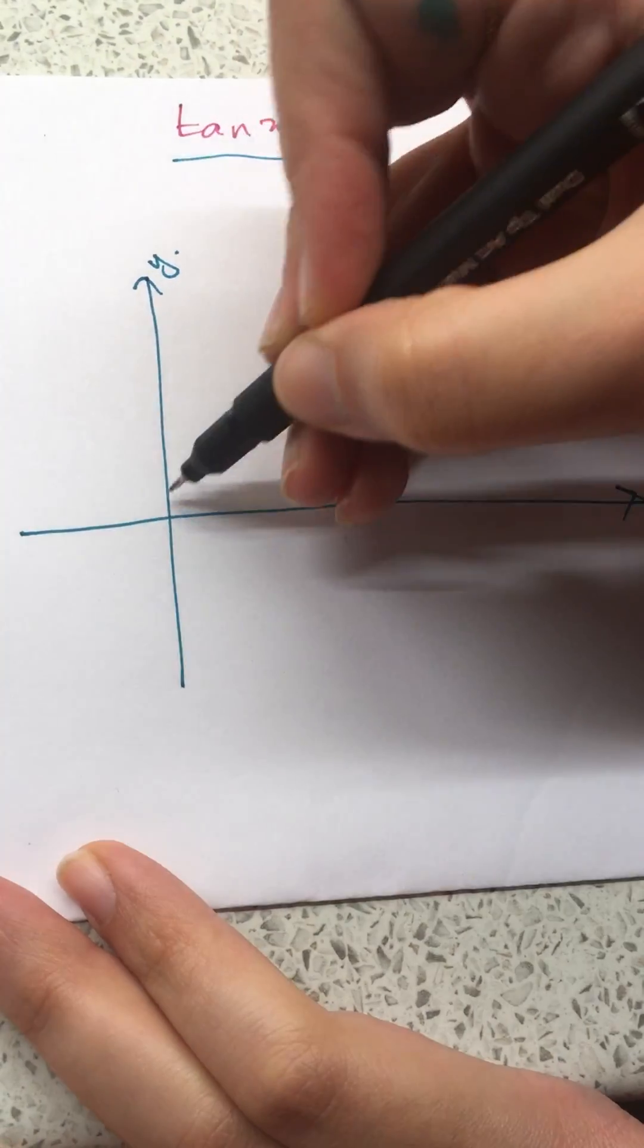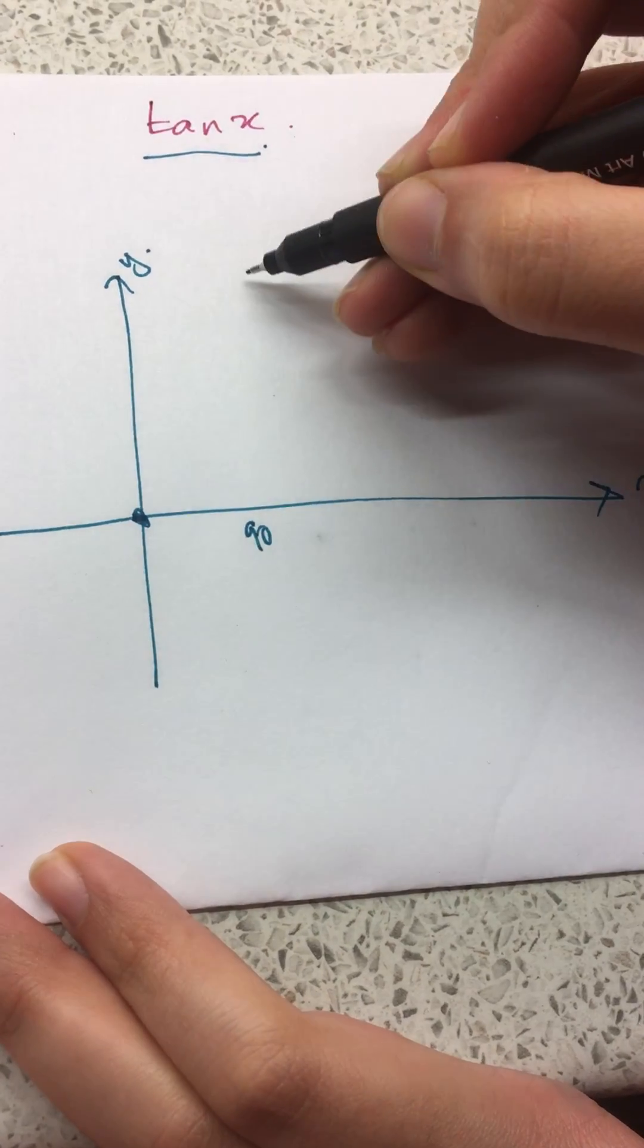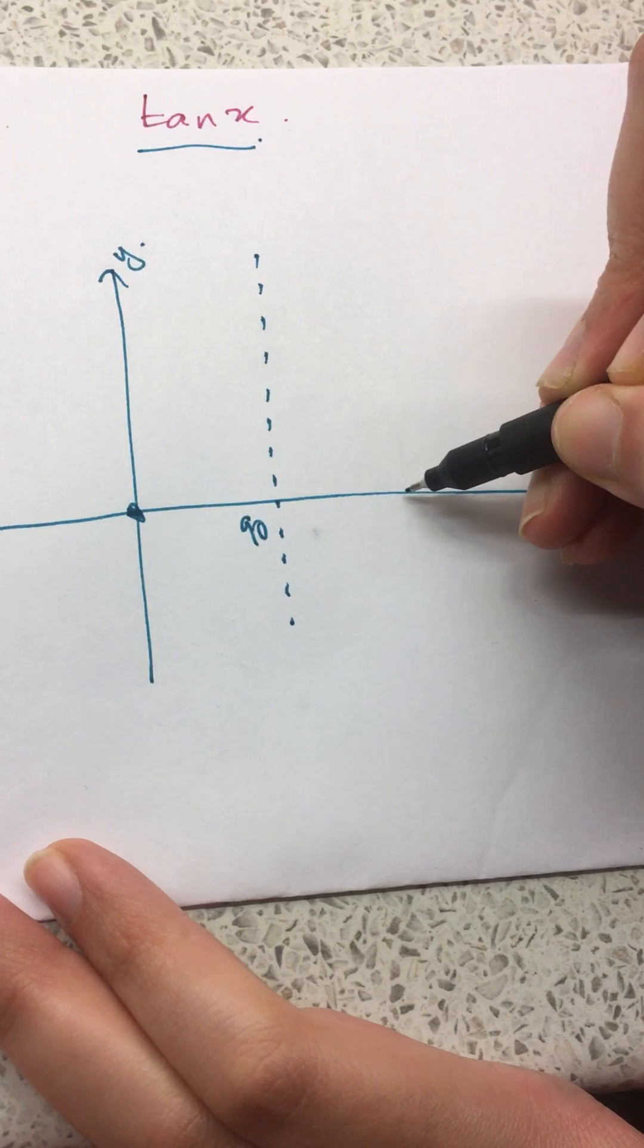Tan x goes through 0, and then I have an asymptote at 90, so I draw a dotted line, and then it will go through 180.